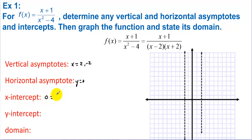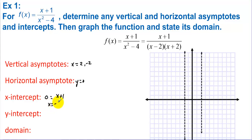For x-intercepts, we plug 0 in for y: 0 = x + 1, so we have an x-intercept at x = -1. Note that we don't worry about the denominator — if the denominator were zero, that would be undefined and give us vertical asymptotes. For the y-intercept, we plug 0 in for x in the original form, and we get -1/4.